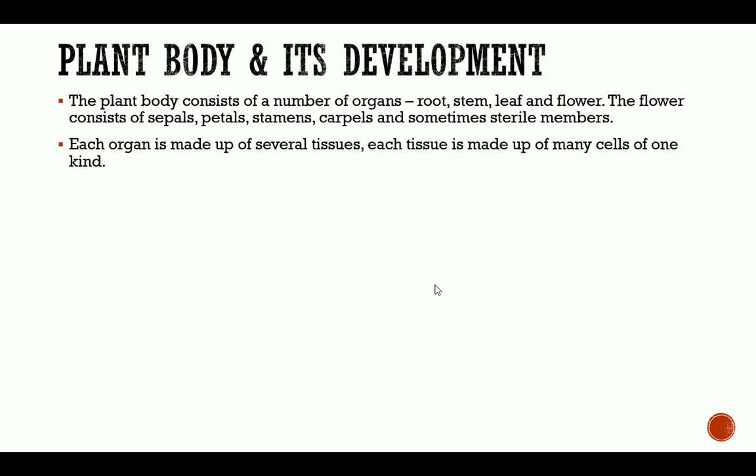Each organ is made of several tissues, and each tissue is made up of many cells of one kind. A whole plant is made up of organs, those organs are made up of tissues, and those tissues are made up of cells. When we talk about axes, we're referring to different parts of the plant — the stem and the roots. On the stem axis we have appendages such as leaves, emergences, and hairs, while on the roots we have emergences and hairs.